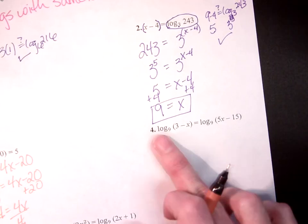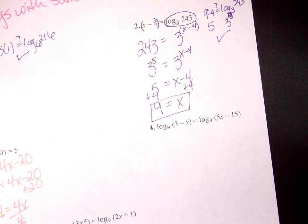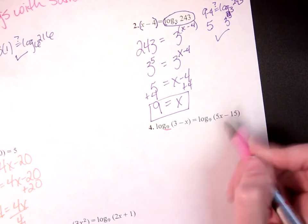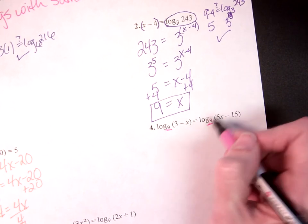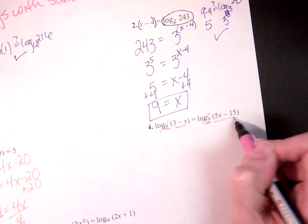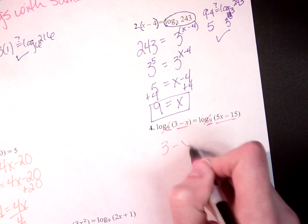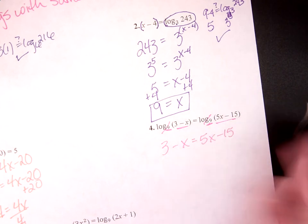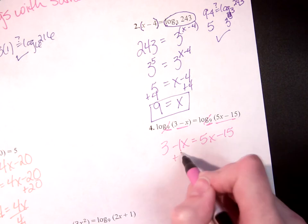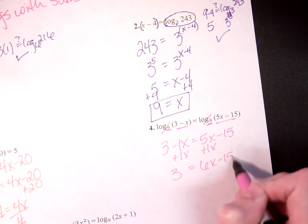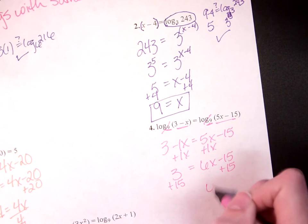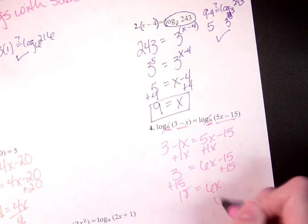Here, I've got log terms on each side, and just like with exponential, I want to check and make sure that my bases match, and they already do. So just like with exponentials, my bases match, so I can ignore them and just focus on getting what's inside to work. 3 minus x equals 5x minus 15. Let's put the 1 back in there so we don't forget about it. Plus 1x, 3 equals 6x minus 15. 6x equals 18, x equals 3.